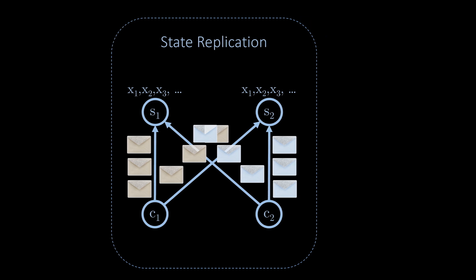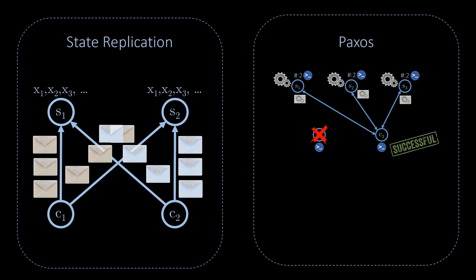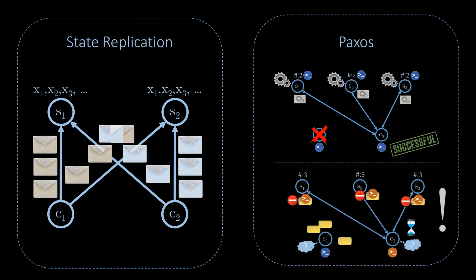In this video, we learnt about the concept of a ticket and how the Paxos protocol uses tickets to ensure that all servers execute the same command if a command is indeed executed. We also learnt that Paxos does not guarantee that any command is actually executed because clients may constantly invalidate the tickets used by other clients.